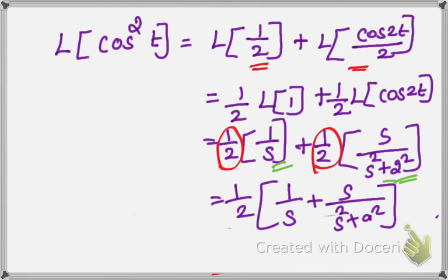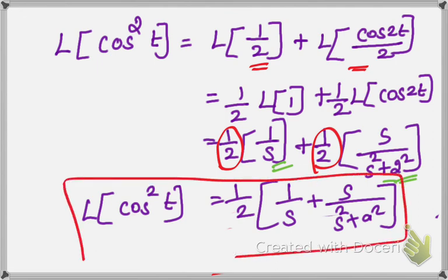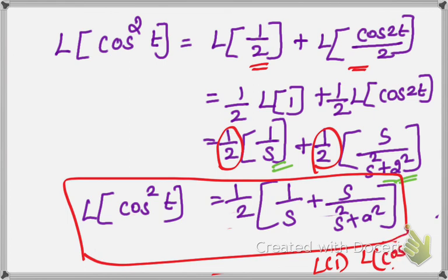This is the final value of L of cos squared t, equal to 1 by 2 into 1 by s, plus 1 by 2 into s by s squared plus 4. The individual formulas for L of 1 and L of cos at are verified in the description box. Thank you, that is all.